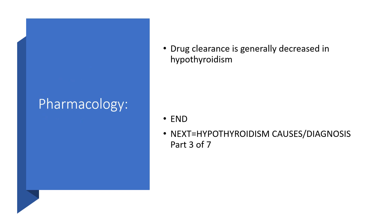On pharmacology — and I'm not discussing treatment right now — drug clearance is generally slow in hypothyroidism. So be careful when giving medications with a narrow therapeutic index to a patient with hypothyroidism. With that, I've come to the end of this presentation, having dealt with all the possible clinical features of hypothyroidism. The next presentation will cover causes of hypothyroidism and how to make the diagnosis, forming part 3 of 7 of this series.